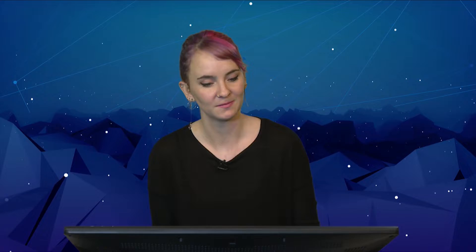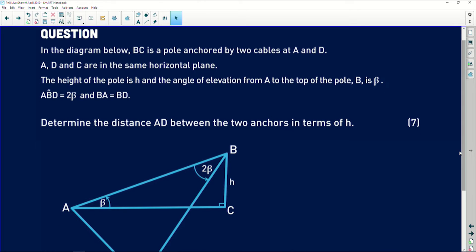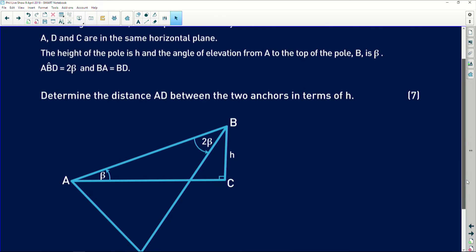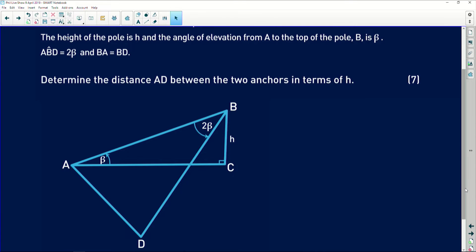Okay guys, you see it's as easy as that - send in a video of your question, whatever you need help with, just send it through. This is a really cool question because it's got some basic 2D and 3D stuff in it. Let's have a look at what this question is. It says in the diagram below, BC is a pole anchored by two cables at A and D. A, D, and C are in the same horizontal plane. The height of the pole is h and the angle of elevation from A to the top of the pole B is beta. They also give us that angle ABD is equal to 2 beta, and the length BA is equal to the length BD, which we haven't indicated on our diagram, so I'm going to do that here.